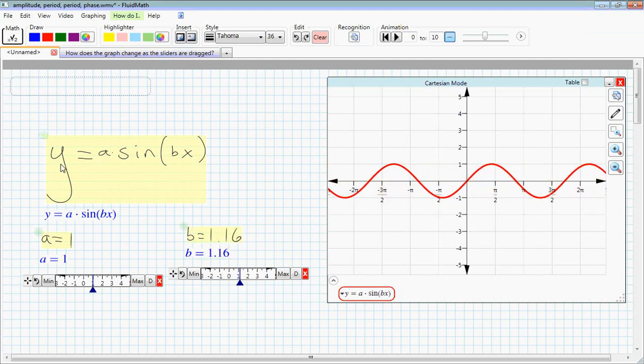Okay, so you can see we have this general form of an equation forming here. y equals a, some parameter, variable, times the sine of b, another parameter, times x.